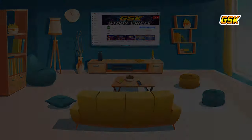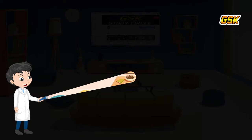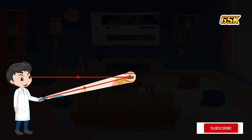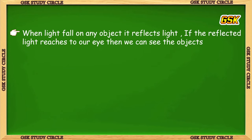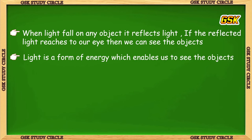When the light is off, if we have a torch and a particular object that is not in the middle of the room, the torch shines light on the object. That is, light is what reflects off objects and enables us to see them. Light is a form of energy which enables us to see the objects.